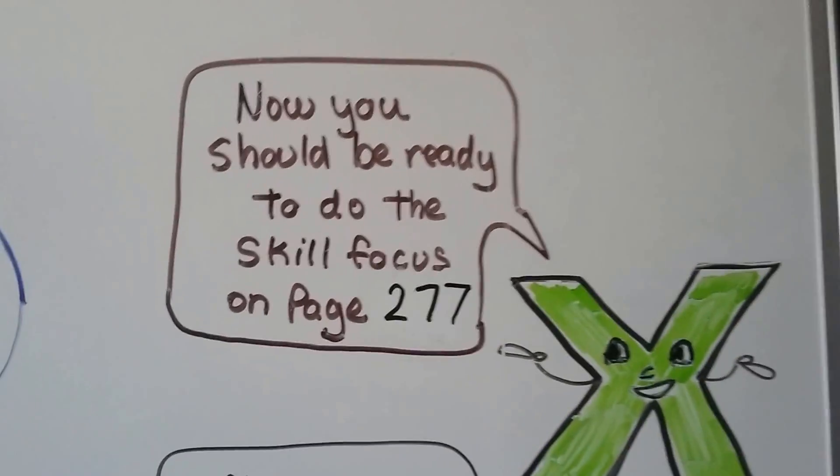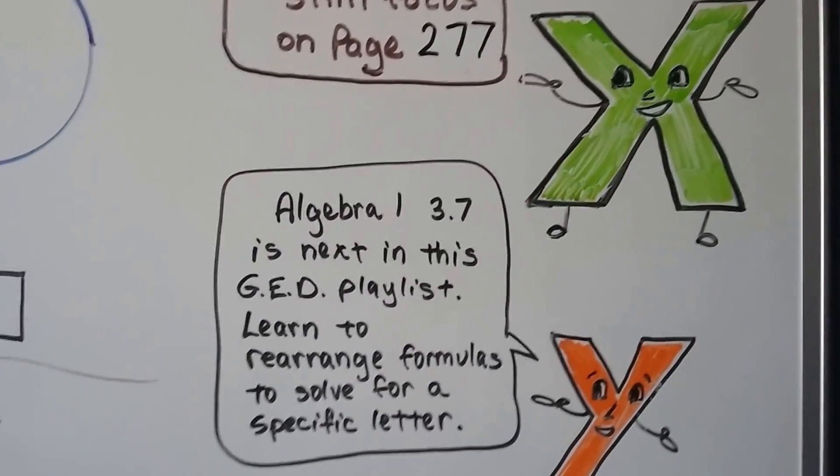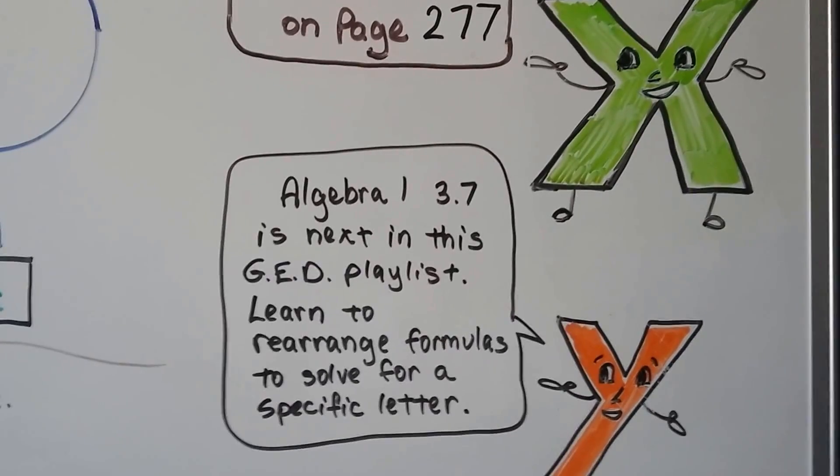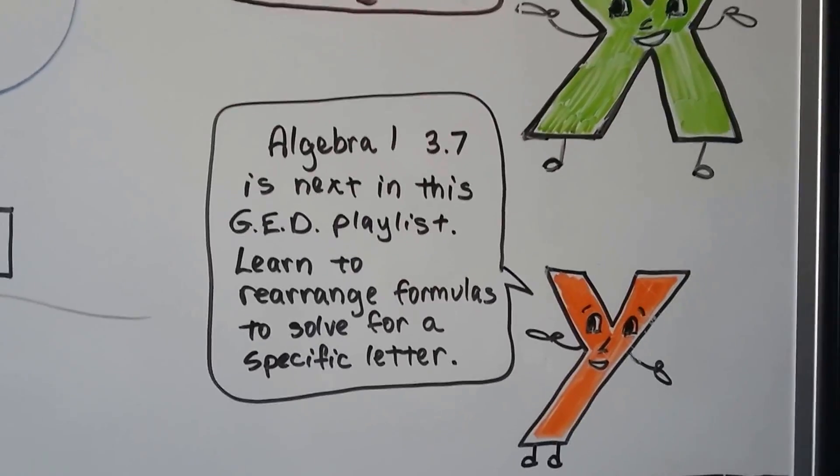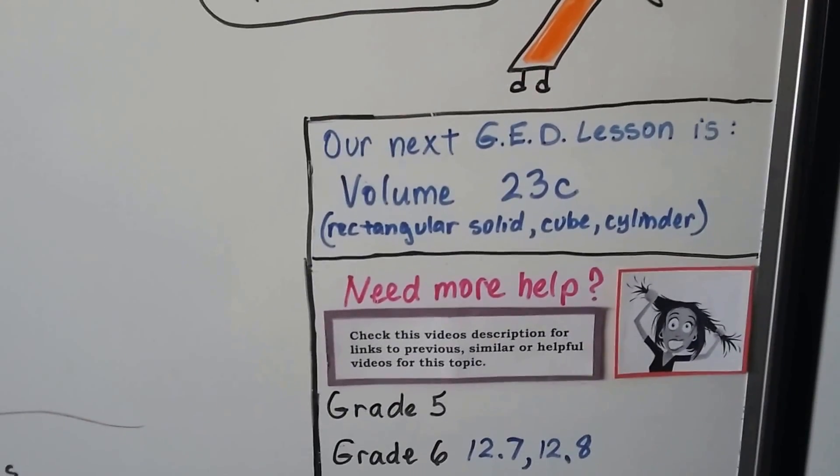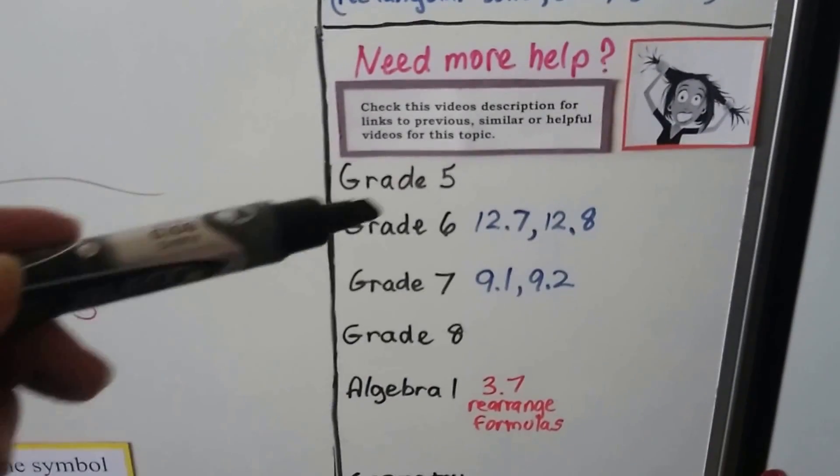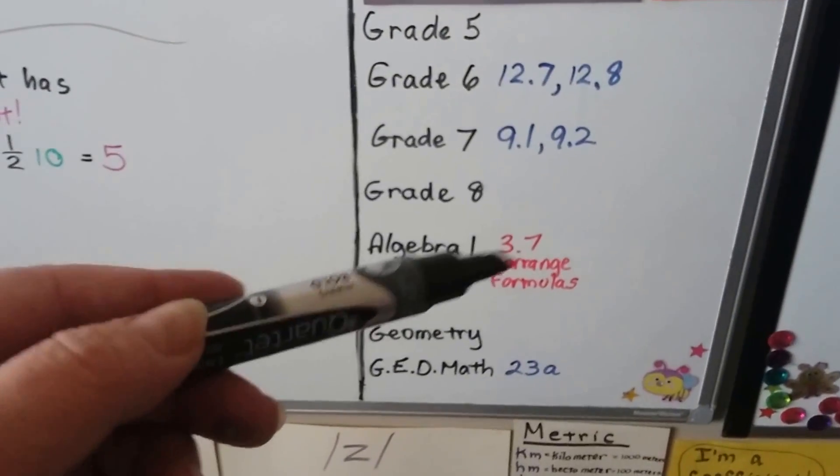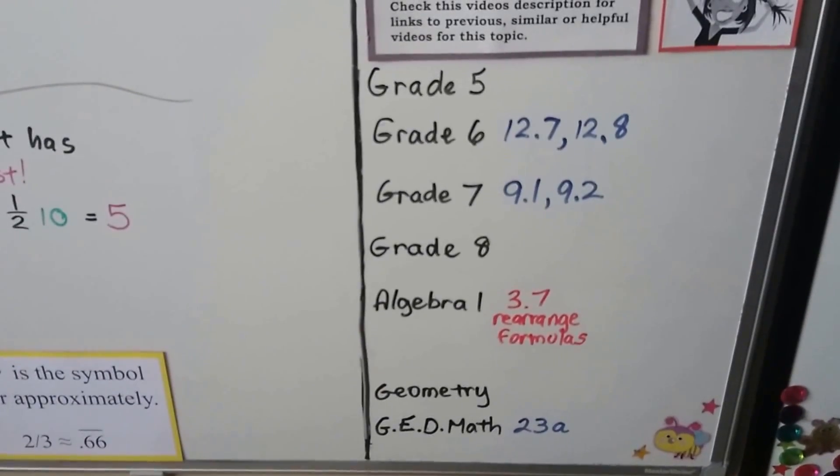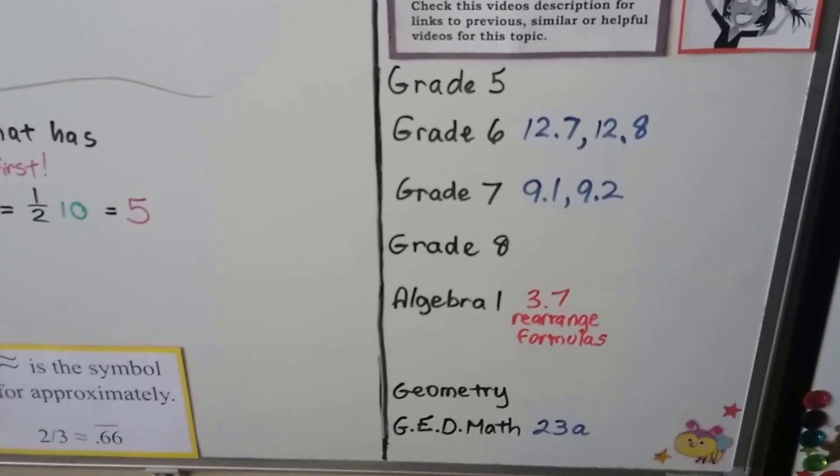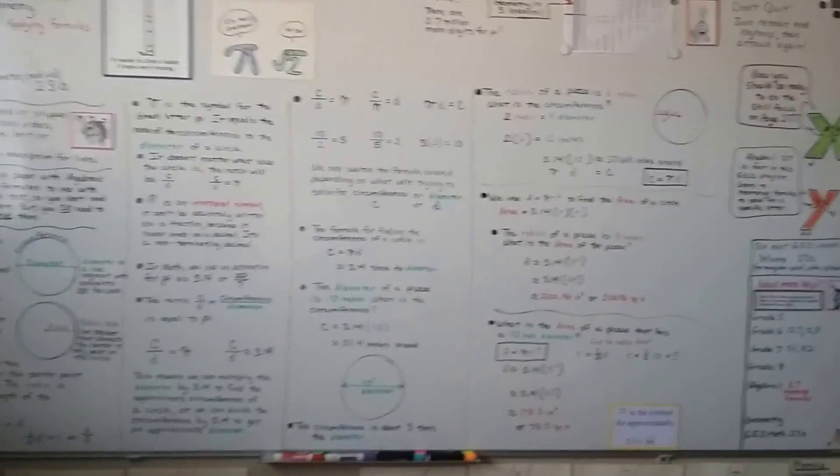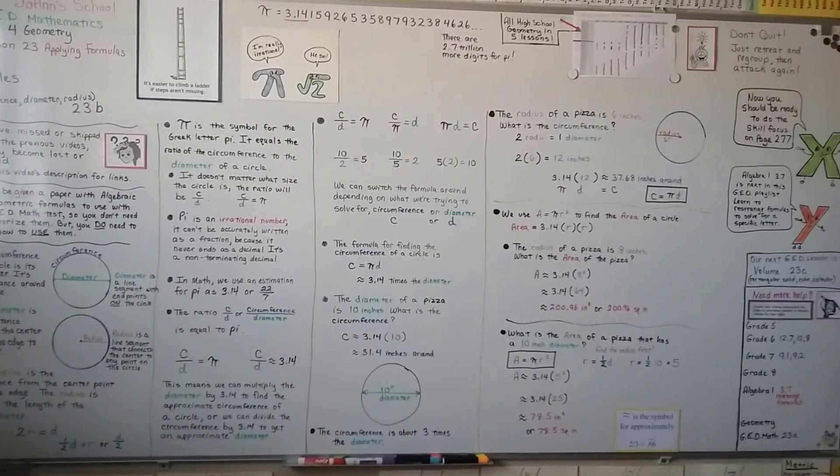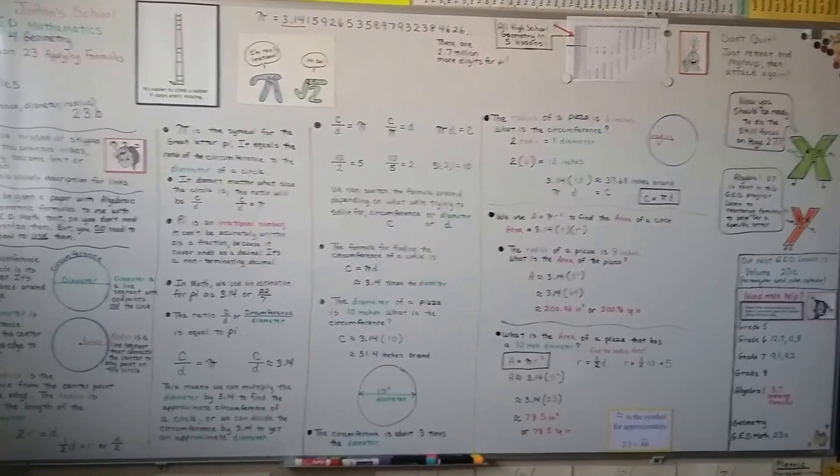So you should now be ready to do the skill focus on page 277. There's an Algebra 1 3.7 video, and it's going to actually come up as next in this GED playlist. And you can learn to rearrange formulas to solve for a specific letter, just like we did just now. And then the next GED lesson is going to be about volume. We're going to do rectangular solids, cubes, cylinders, and there'll be links in this video's description for extra videos. And that one's following next, and there's going to be a link to the previous video that we did on triangles and parallelograms, and we did the area and perimeter for those. So watch the next video about rearranging formulas because that's really going to help you. It's a lot of stuff that we pretty much covered in Algebra 1, but you may not have seen that, so just watch that one video, it'll help. And I'll see you next time. Have a great day. Bye.